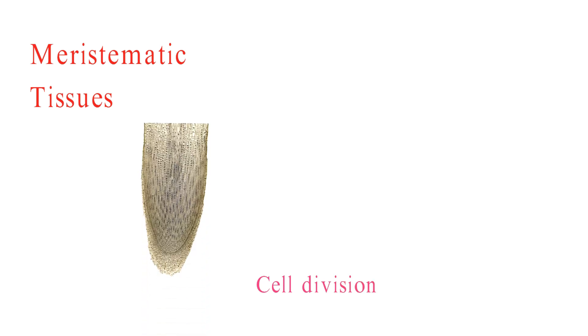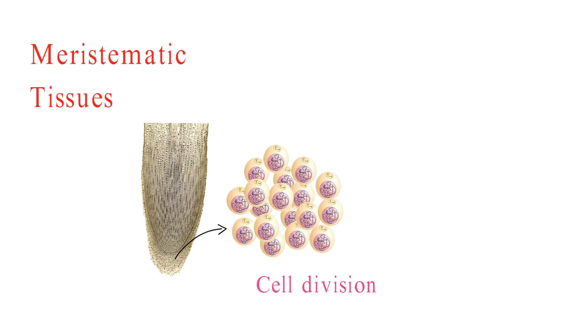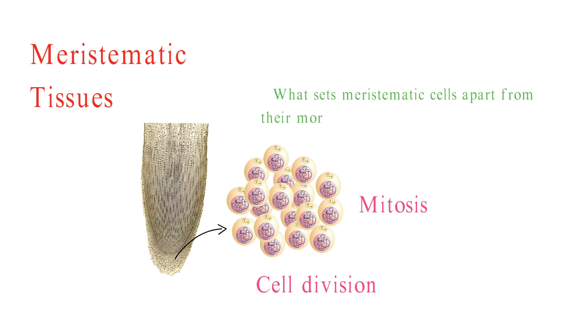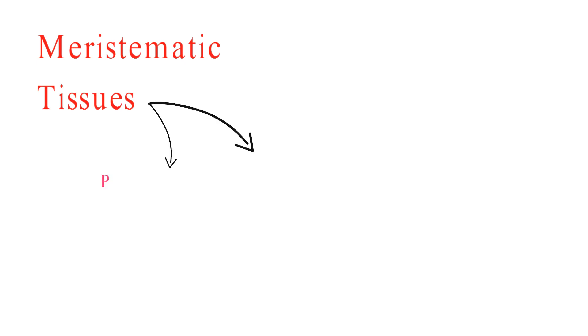Let's uncover the secret behind meristematic tissues' power: cell division. These remarkable cells are like perpetual motion machines, constantly undergoing mitosis and giving birth to new cells. What sets meristematic cells apart from their more laid-back plant cell counterparts? Let's explore the two flavors of meristematic tissues: primary and secondary meristems.